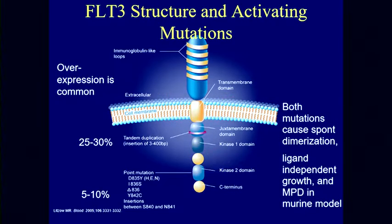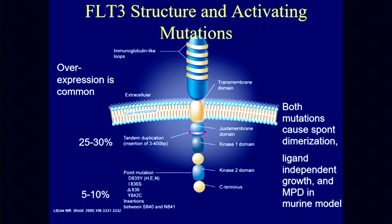FLT3 is a transmembrane tyrosine kinase, and its overexpression in AML is common. It's important in hematopoiesis generally and is required for normal blood cell formation. Mutations of this kinase are common in AML — about 30 to 35% of people with AML have a mutation. About three-quarters of the mutations are juxtamembrane ITD mutations — a duplication of between several and a hundred amino acids — which cause spontaneous dimerization and abrogate the usual requirement for ligand-based activation. About a quarter are point mutations in the tyrosine kinase domain, which similarly cause spontaneous dimerization and abrogation of the need for ligand binding.